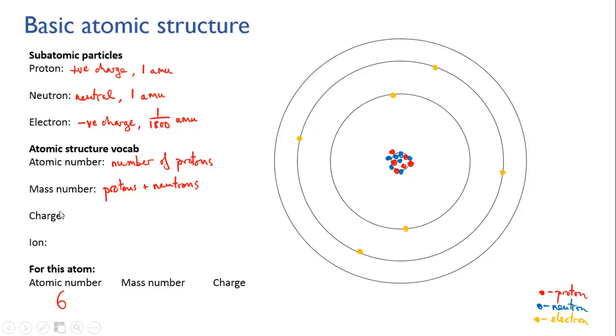So for this atom we have an atomic number of six — that's six protons — and the mass number is the protons plus the neutrons, which is six plus seven, which is 13.